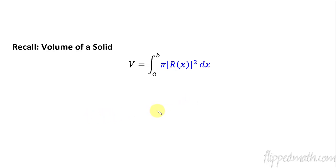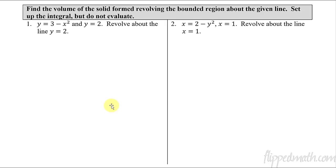Let's remember what the volume of a solid of revolution is. The volume is the integral from A to B — the region we're bounding — and then we do pi r squared, where r is the radius of the volume we're revolving. The radius is just f(x). Hopefully that was clear in your last lesson, because this is the same type of stuff.